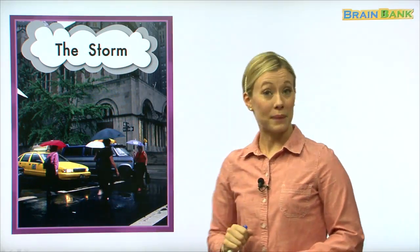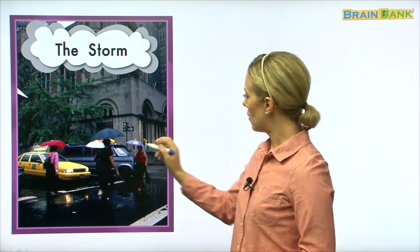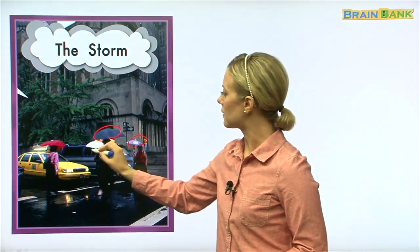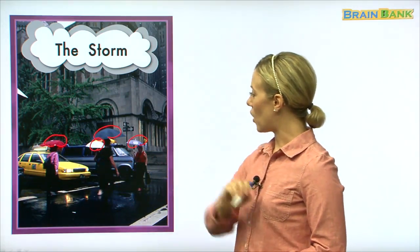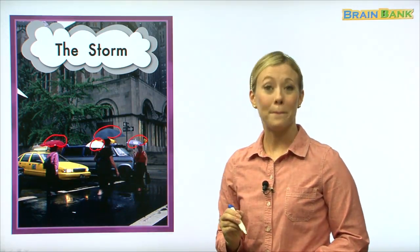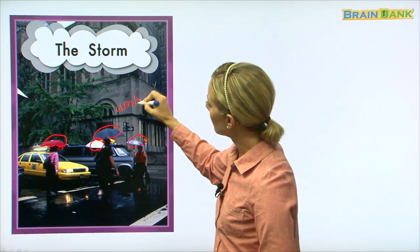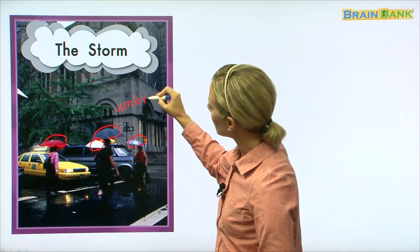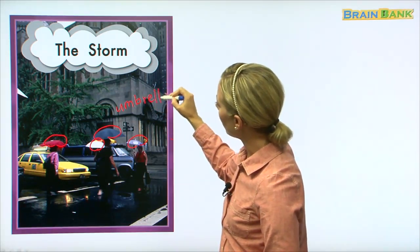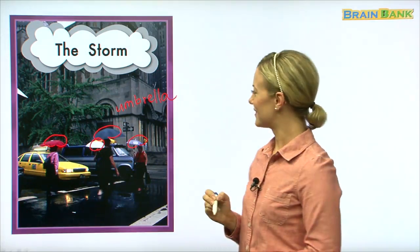So here, we have a picture of some people in a storm. And what are they carrying above their heads? What is this, and this, and this, and this? What do we call those? That's right. We call each one of those an umbrella. U-M-B-R-E-L-L-A. Umbrella. These are called umbrellas. Very good.